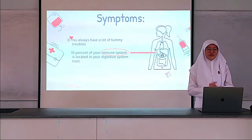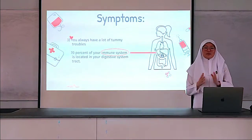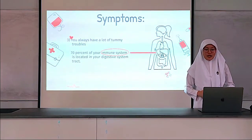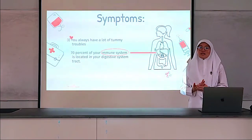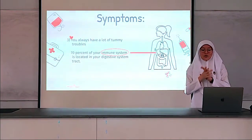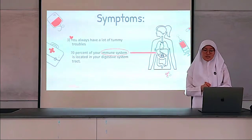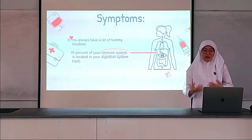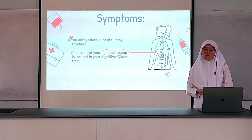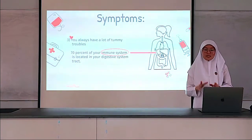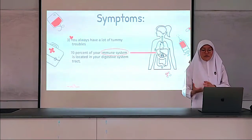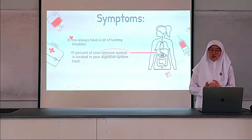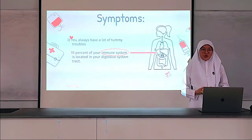Three, you always have tummy trouble. 70% of your immune system is located in your digestive tract. Useful microorganisms and bacteria protect you from harmful diseases. If you lack these useful microorganisms and bacteria, this can lead to a weak immune system, making you easily attacked by harmful bacteria or viruses, and can lead to worse autoimmune disorders.